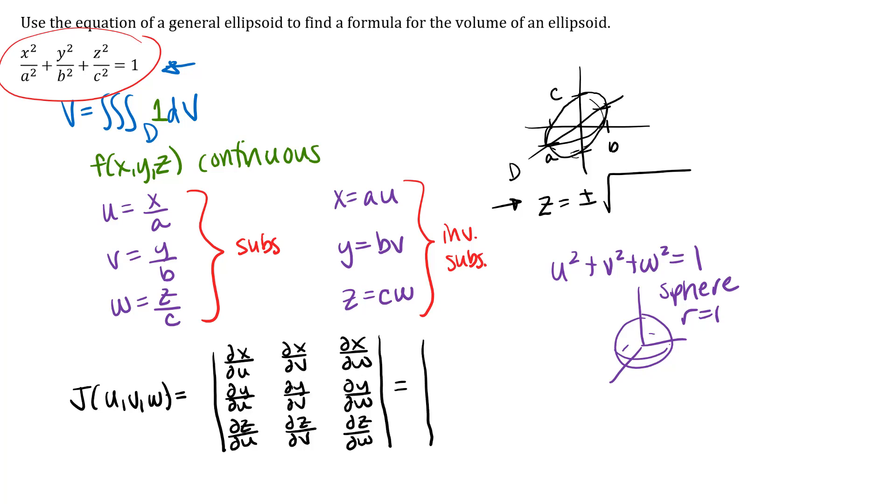So when I find all of those partial derivatives, partial derivative of x with respect to u will be a, and then the other two partial derivatives of x with respect to the other variables will be zero. And we have a similar relationship for y and z.